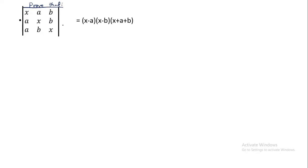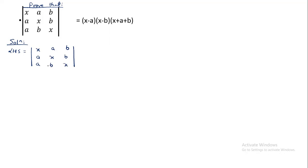We will see the determinant of the matrix with entries x, a, b in the first row; a, x, b in the second row; and a, b, x in the third row. This is our given question.